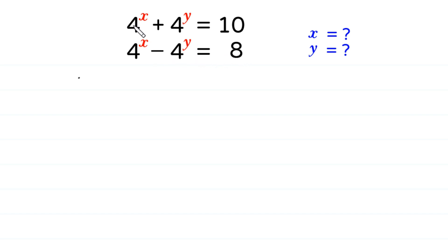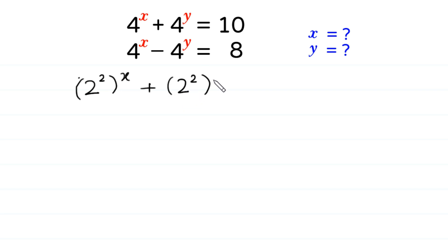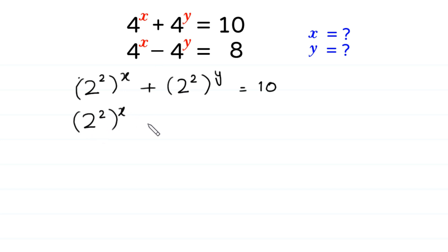We can write 4 to the power x as 2 to the power 2, whole to the power x, plus we can write 4 to the power y as 2 to the power 2, whole to the power y, is equal to 10. And in the second equation, we can write 4 to the power x as 2 to the power 2, whole to the power x, minus 2 to the power 2, whole to the power y, is equal to 8.